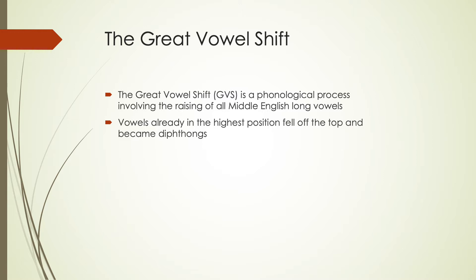The vowels that were already in the highest position — thinking about height in the mouth as low, mid, high — the high vowels that did change ended up falling from the top and became diphthongs instead. So some of our present-day diphthongs came about as a result of the Great Vowel Shift as well.